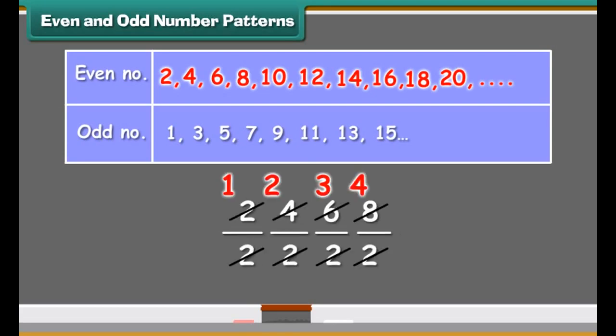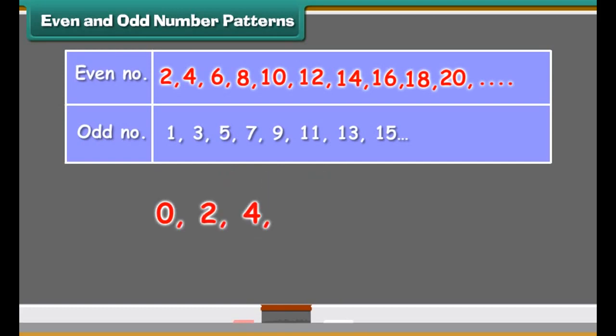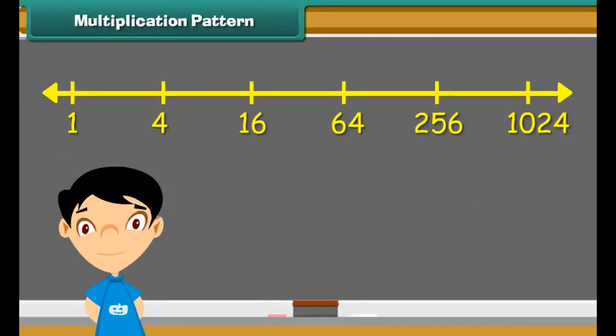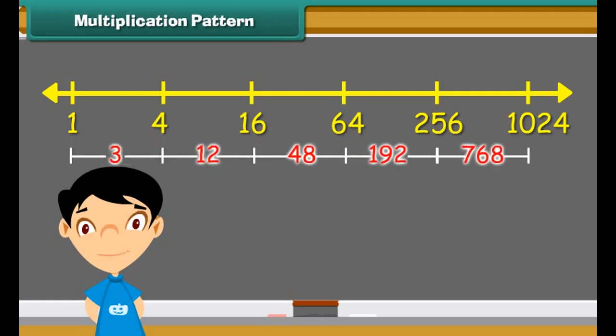Two, four, six, eight, ten, twelve, fourteen, sixteen, eighteen, twenty, and so on. One, three, five, seven, nine, eleven, thirteen, fifteen, and so on. The first series are called even numbers. Even numbers are divisible by two and end with zero, two, four, six, and eight.